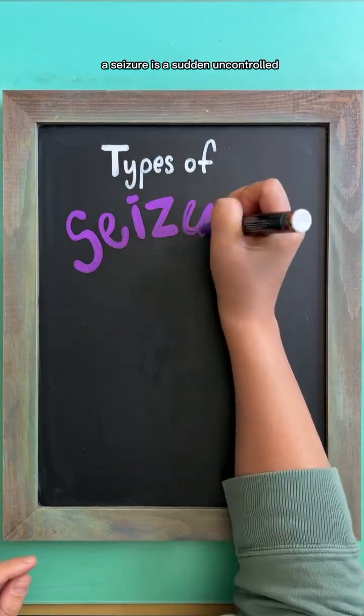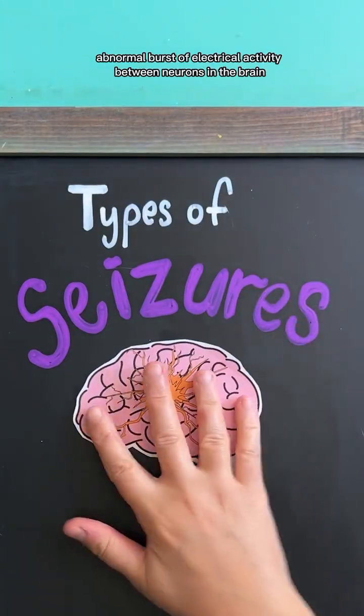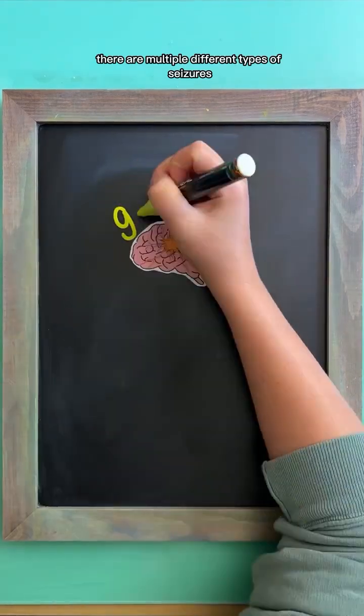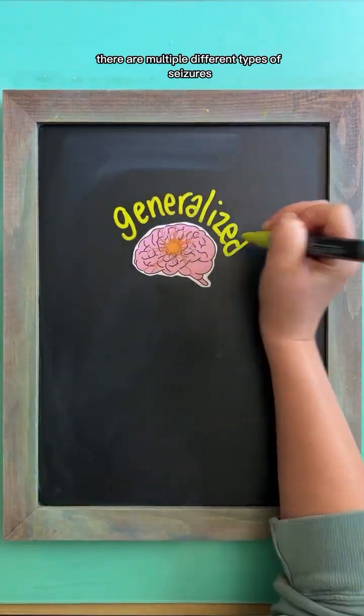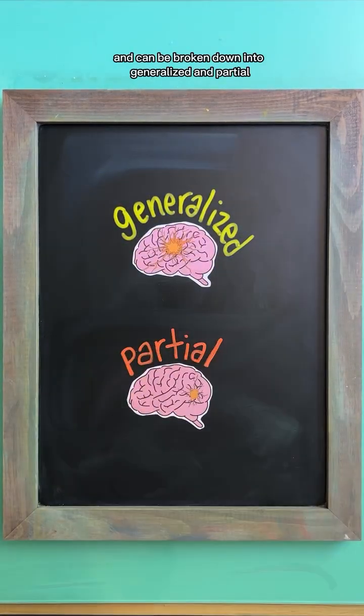A seizure is a sudden, uncontrolled, abnormal burst of electrical activity between neurons in the brain. There are multiple different types of seizures and can be broken down into generalized and partial.